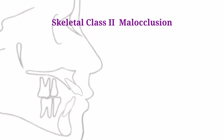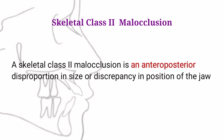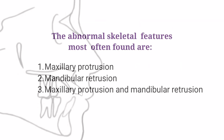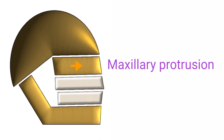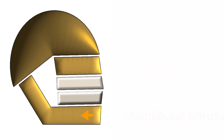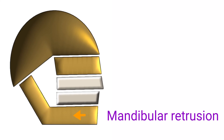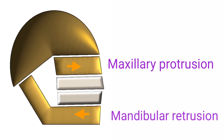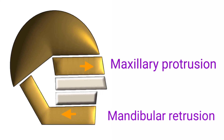A skeletal Class II occlusion is an anterior-posterior discrepancy in size or position of the jaw. The abnormal skeletal features most often found are mesial protrusion, mandibular retrusion, and maxillary protrusion with mandibular retrusion.